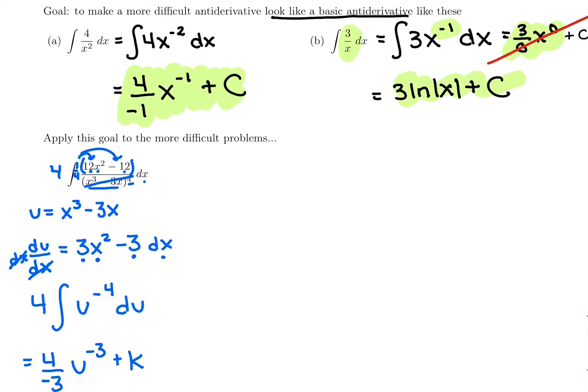So then my final answer, I'm going to replace my u with x's. I'm going to have that negative 4 thirds out front. I'm going to replace my u with x's, which was x cubed minus 3x. There's my antiderivative.